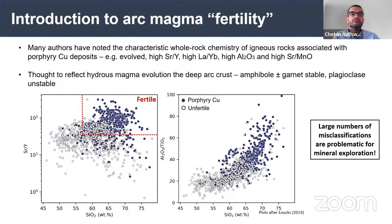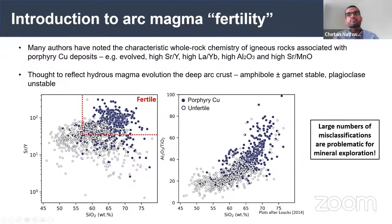This is useful for mineral exploration; however, you might notice there are a large number of misclassifications — a large number of false positives, which can be problematic for mineral exploration. This is where machine learning can come in: trying to minimise false positives and misclassifications.